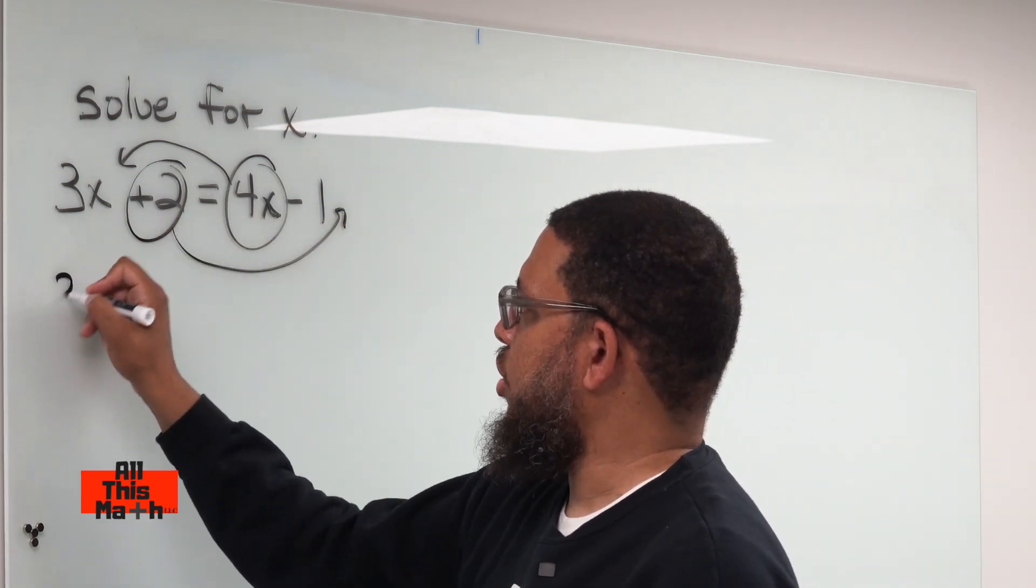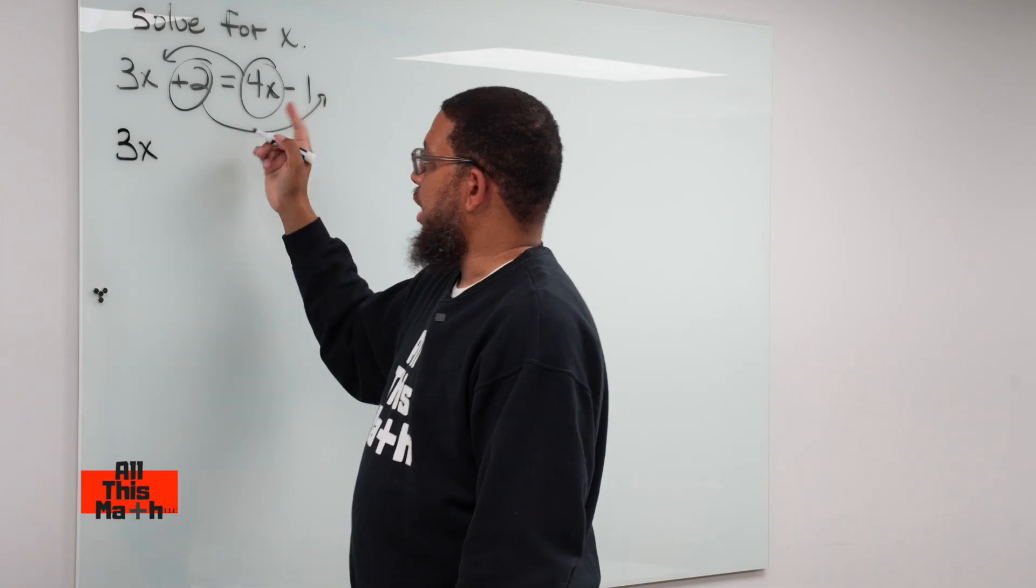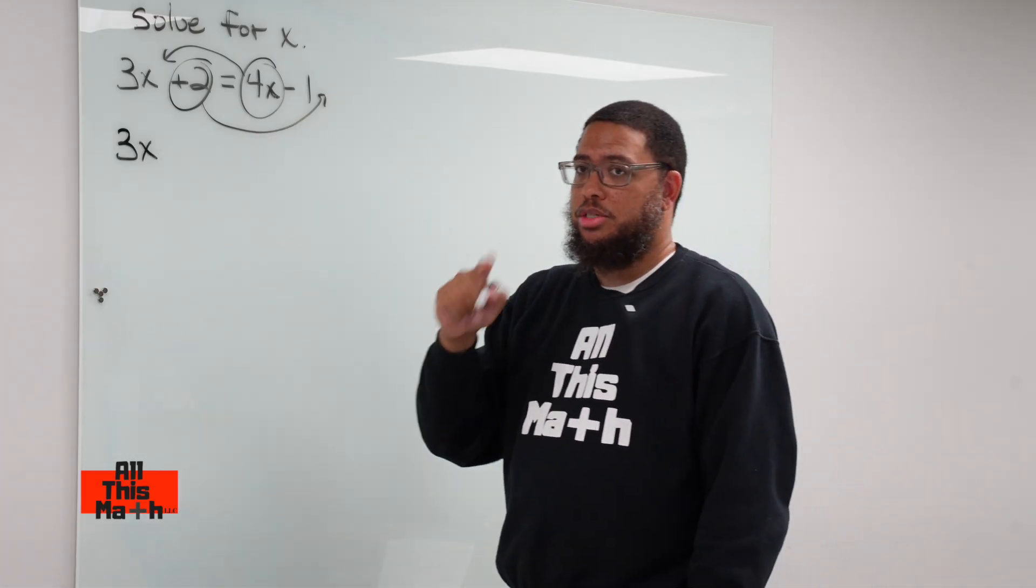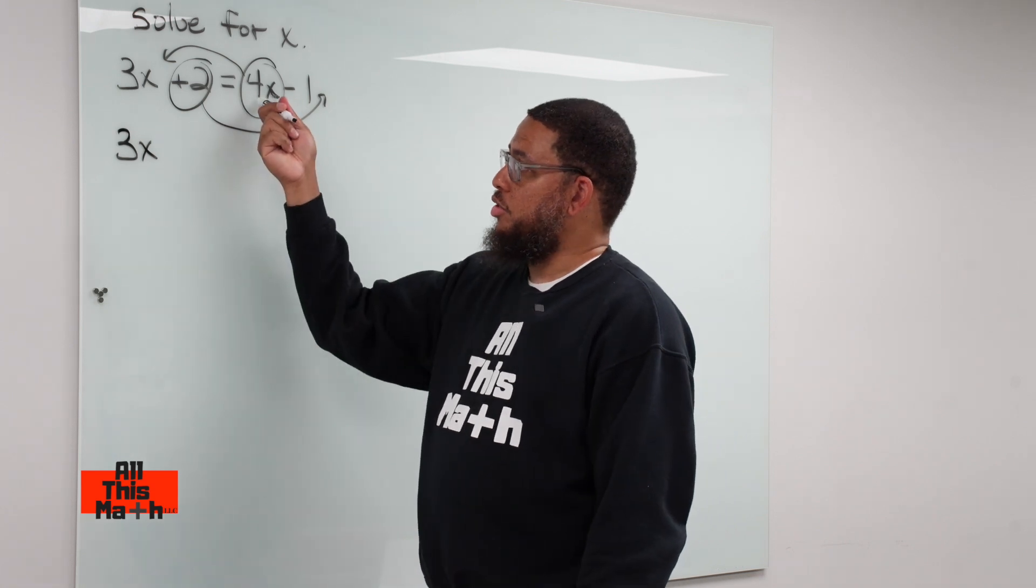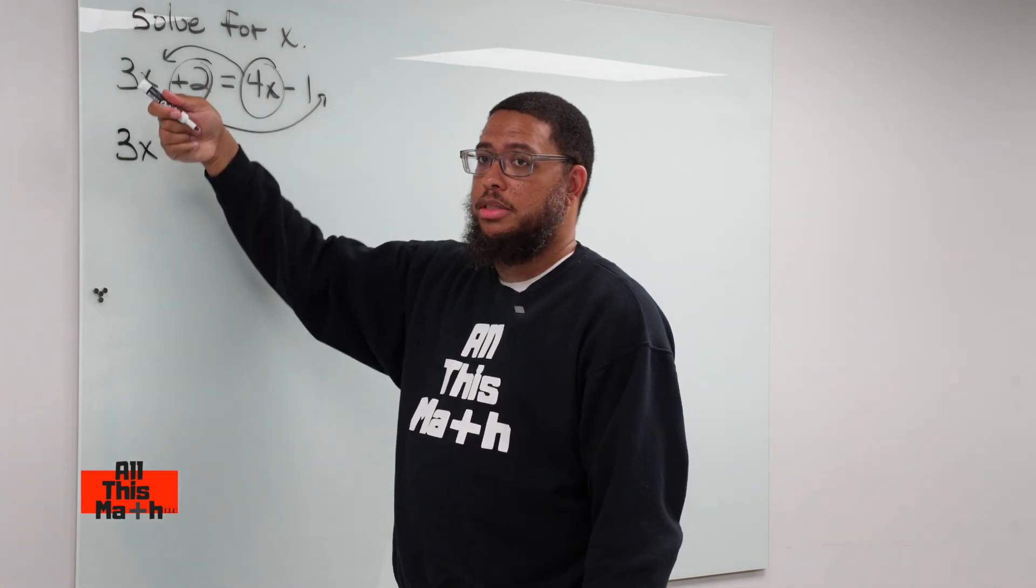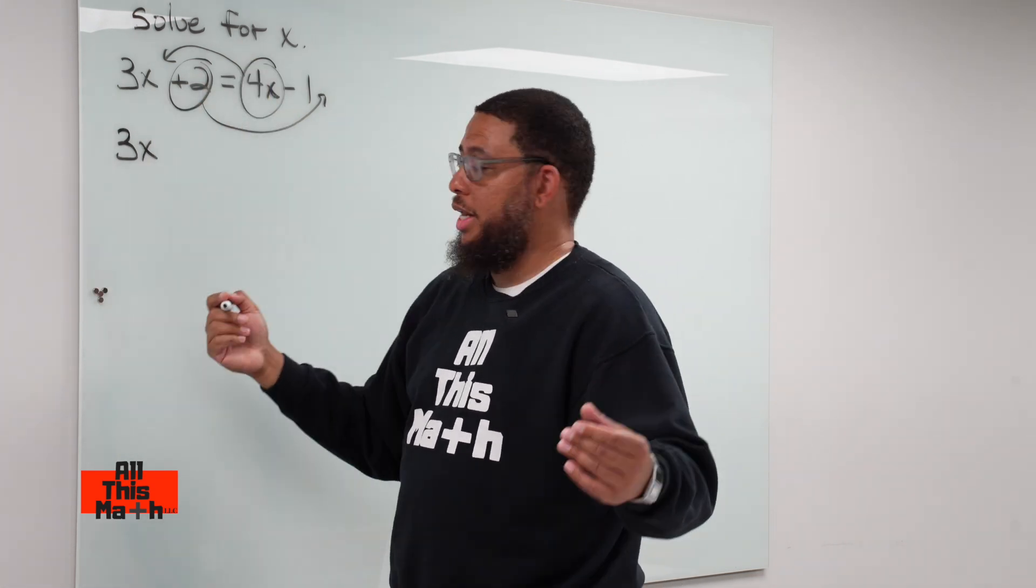So now I rewrite the equation, 3x. Now another thing though, when you transpose, the sign of that term must change. So this positive 4x on the right side, when it moves to the other side or gets transposed, now it becomes negative. So now we have 3x minus 4x.